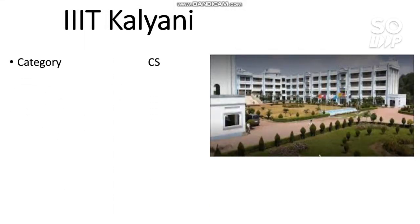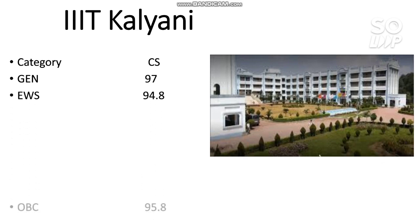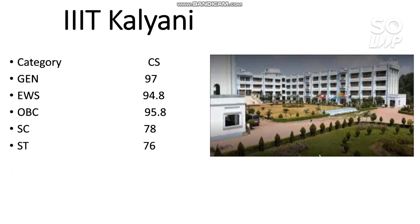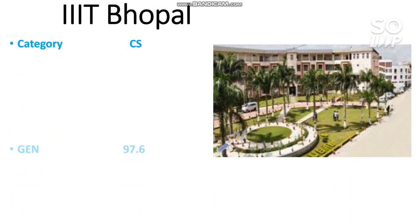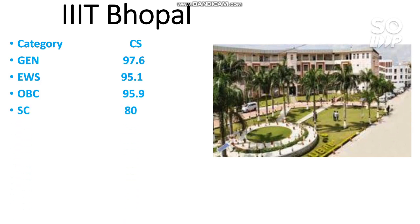The next is IIIT Bhopal. Here is the cutoff for CS: General requires 97.6, EWS 95.1, OBC 95.9, SC 80, and for ST it is 79 percentile required. This covers all 10 lower IIITs - I have discussed the category-wise percentile to get the CS branch for each.